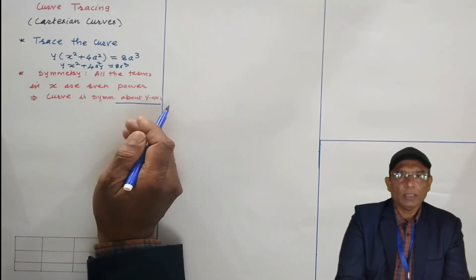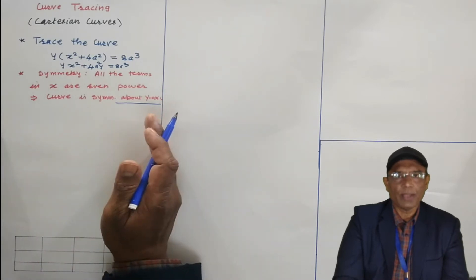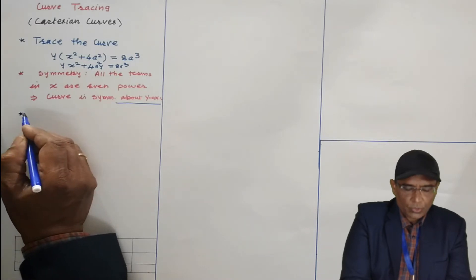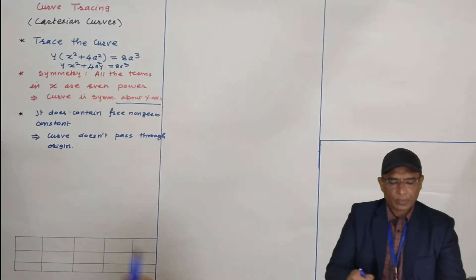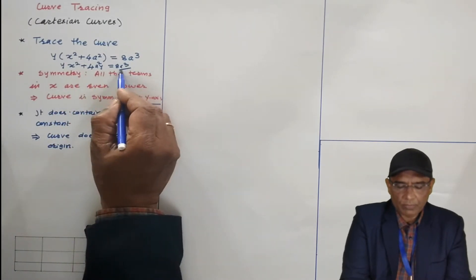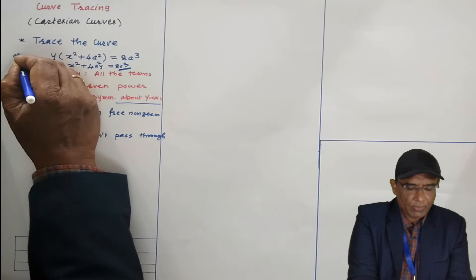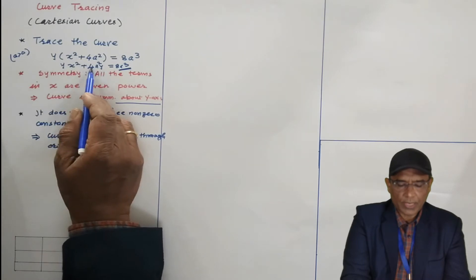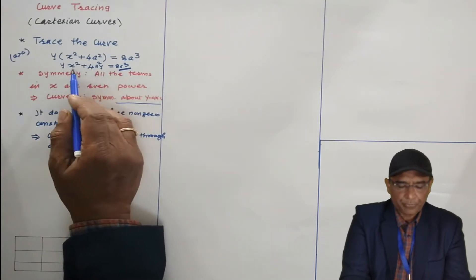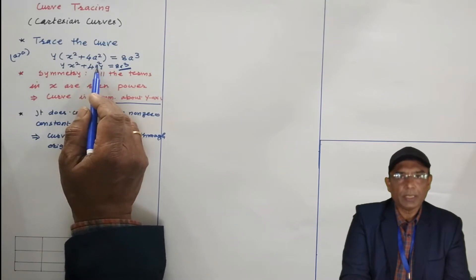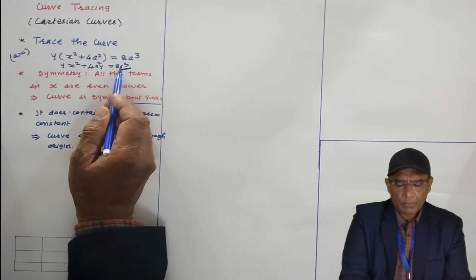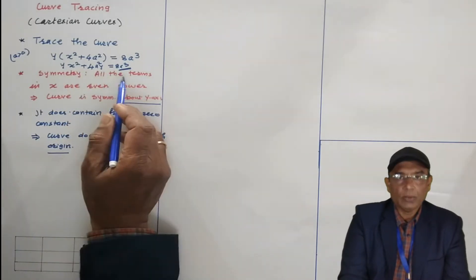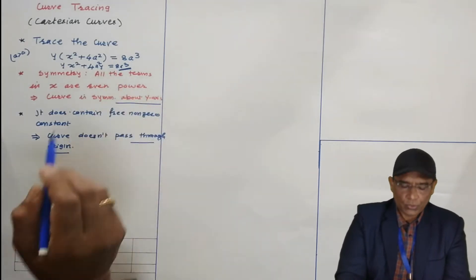Symmetric about the y-axis means on the left-hand side and on the right-hand side of the y-axis, the same portion of the curve will be there. Now, whether it passes through the origin — this curve contains a constant term: 8a³, where a is a constant greater than 0. If the equation of the curve contains a constant term, the curve does not pass through the origin.